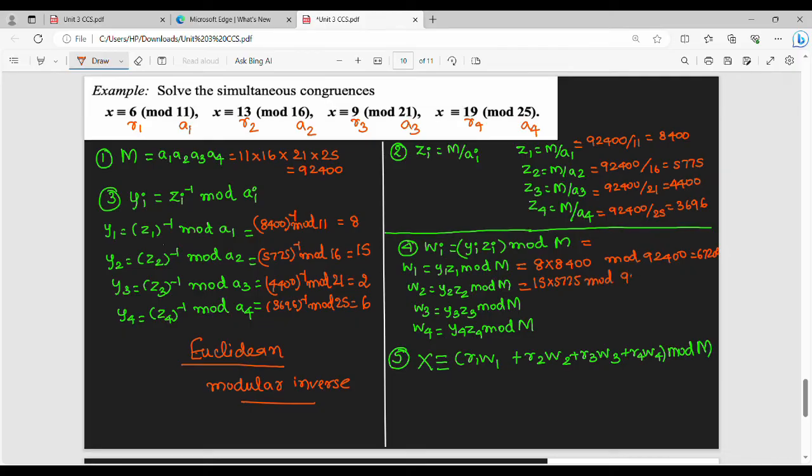Next, y3 value 2, z3 value 4,400, mod 92,400. This simplifies to 8,800. Next, last, y4 value 6, z4 value 3,696, mod of 92,400. This simplifies to 22,176. So step number four done.